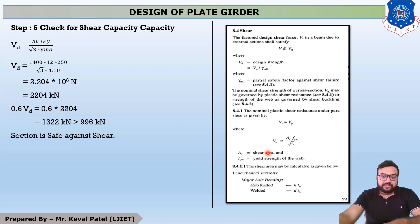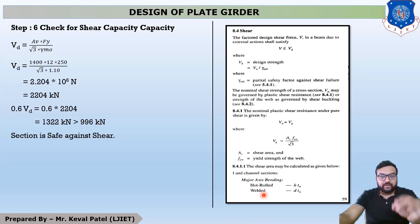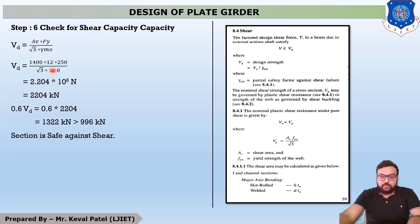For shear area of welded I and channel sections, the equation is Av = D × TW. Our D = 1400 and TW = 12 mm. After substituting all values, we get VD = 2204 kN. However, this is not the final answer.